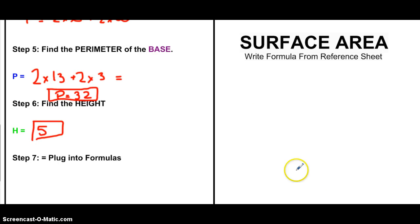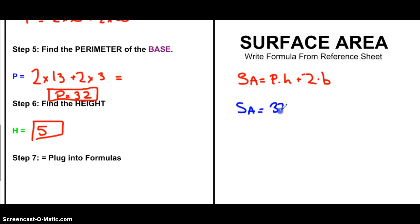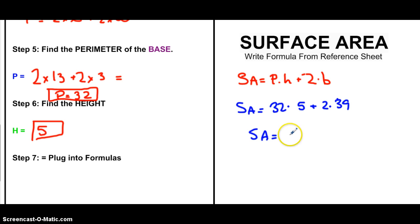Now to find the surface area, we look up the formula. Surface area equals the perimeter times the height plus 2 times the base. So the surface area equals 32 — which is my perimeter — times 5, plus 2 times the base, which is 39. Plugging that into my calculator, the answer is 238 centimeters squared. Don't forget the unit — for surface area we put squared.